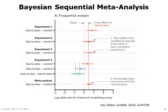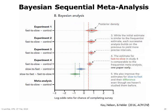Bayesian analysis is also amenable to sequential updating across trials. This example comes from Kay, Nelson, and Heckler. They presented a forest plot of a non-sequential frequentist meta-analysis, with each of four experiments individually analyzed and then a meta-analysis of them all. But with Bayesian methods, they did sequential meta-analysis, showing how the posterior distributions successively incorporate the information from the previous trials. An additional benefit is that the informed prior for the final experiment helped constrain the estimates of other conditions because of shared structure in the model.